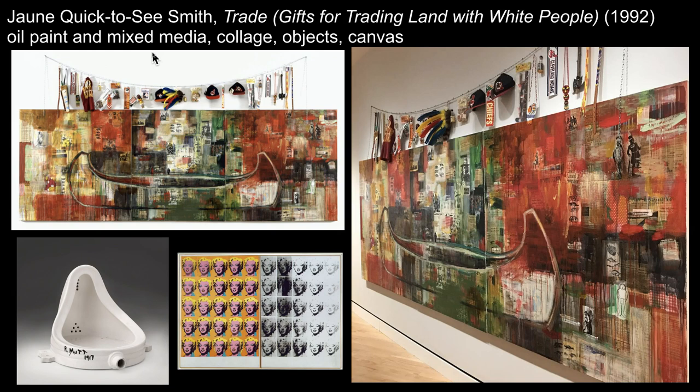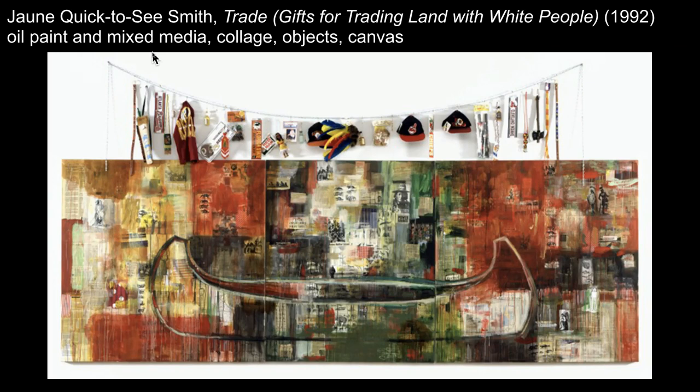The use of everyday objects references pop art, and the use of ready-made objects connects to Dada and conceptual art. Smith creates a work that expresses a critique of the way mainstream Eurocentric culture thinks about the world. The title of the work relates to the stories about European colonists thinking they were buying land from Native Americans, offering trinkets in exchange for territory, and the artist prompts the viewer to consider if they would be willing to make such a trade — to exchange knickknacks for land.